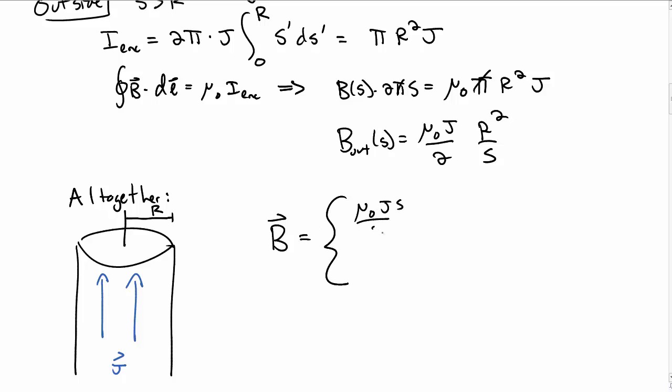Inside, it was μ₀ j s over 2 in the phi-hat direction. Outside, it was μ₀ j r² over 2s in the phi-hat direction.